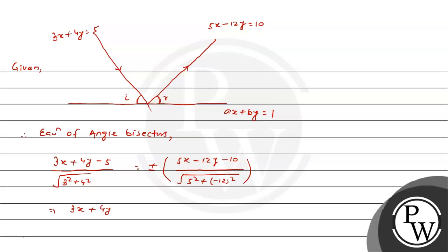(3x plus 4y minus 5) by 5 equal plus minus (5x minus 12y minus 10) by 13.